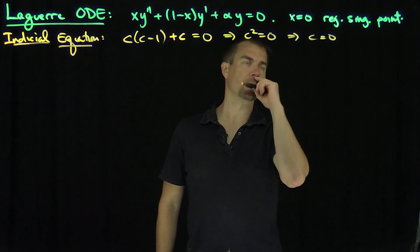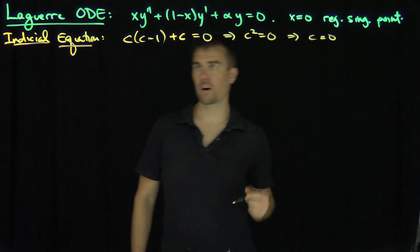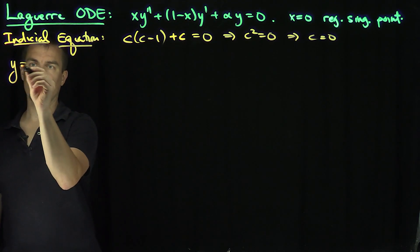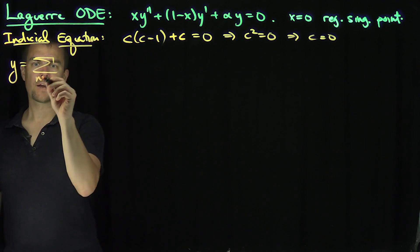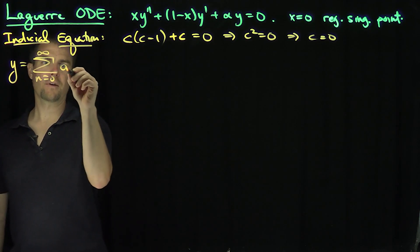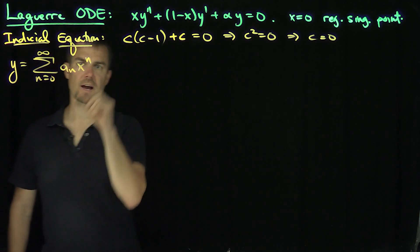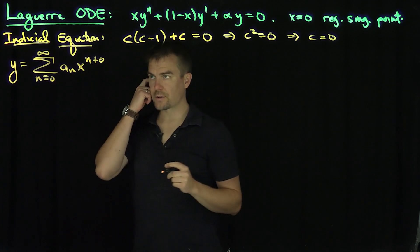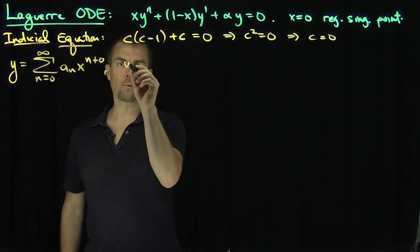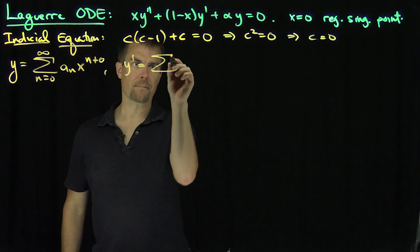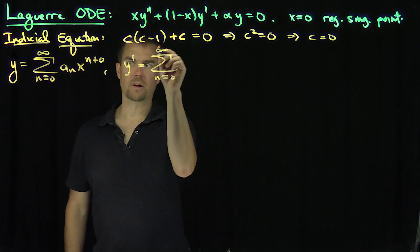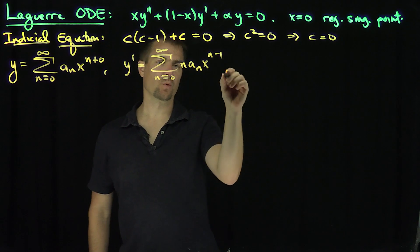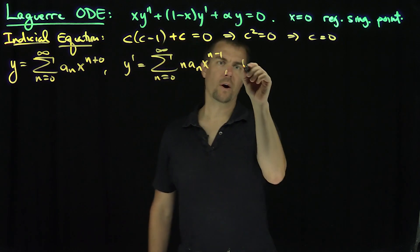Therefore c equals 0 is the only solution. So we can look for solutions of the form y equals the sum from n equals 0 to infinity of a_n x to the n, which is just a standard Taylor expansion. Therefore y prime is the sum from n equals 0 to infinity of n a_n x to the n minus 1, and y double prime...